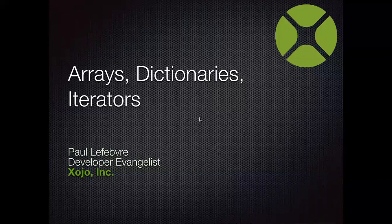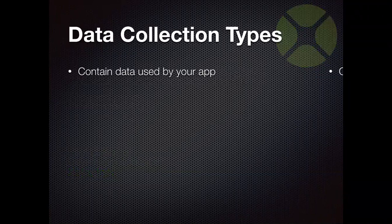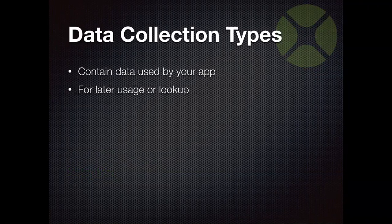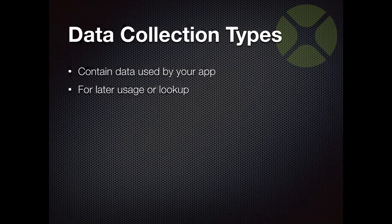Arrays and dictionaries are the primary data collection types — they contain data used by your application. Every app has data it needs to access at some point, and arrays and dictionaries are ways to organize it. You certainly don't want to have millions of global variables tracking things. Collection types allow you to consolidate all of that into one particular data type variable or property that can contain a bunch of things.